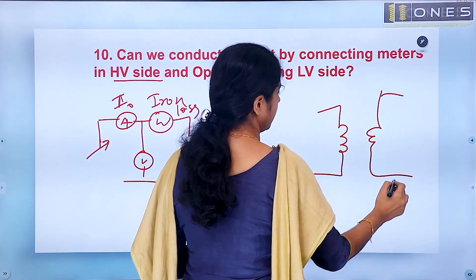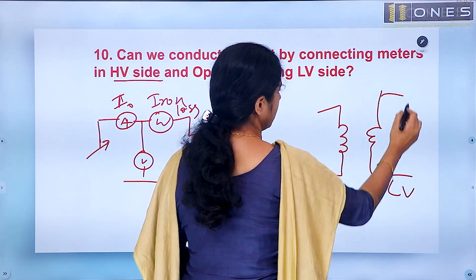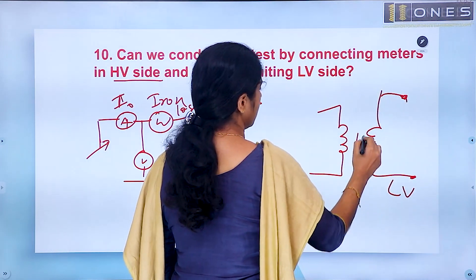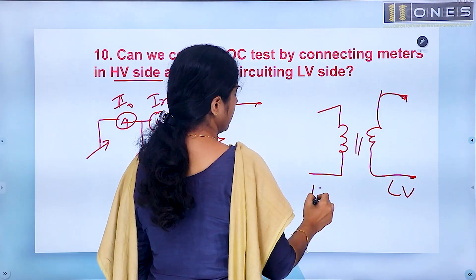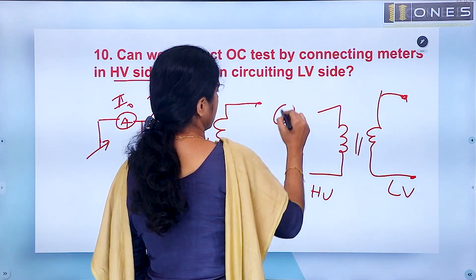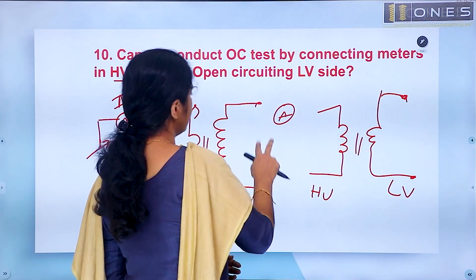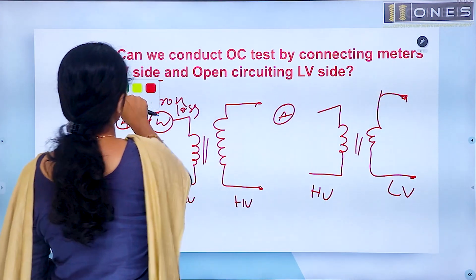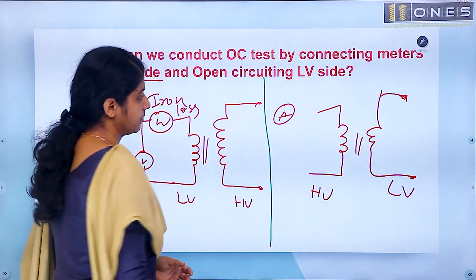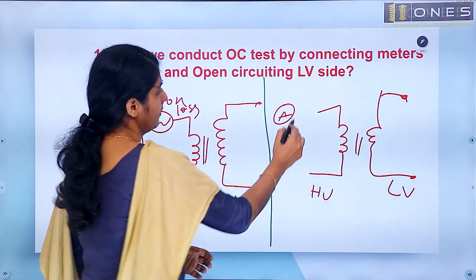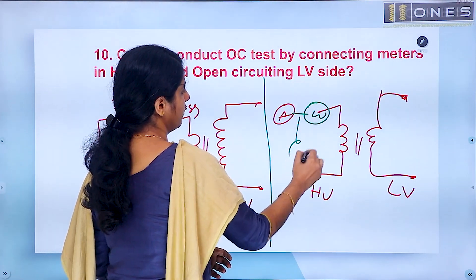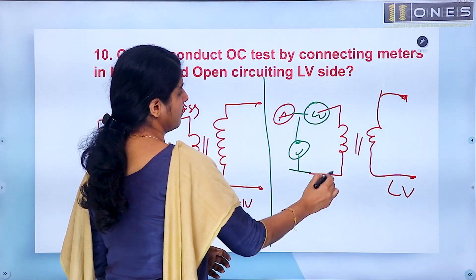If you connect meters on the HV side and open circuit the LV side, the meters would be wattmeters and voltmeters — not on the LV side but on the HV side.